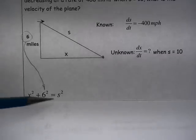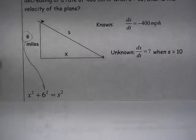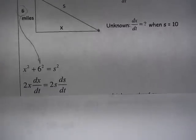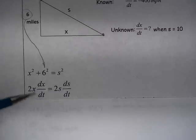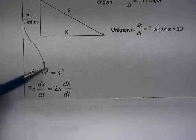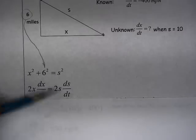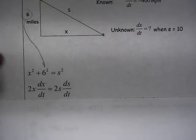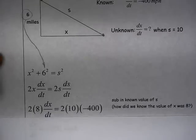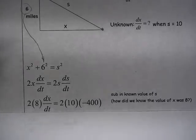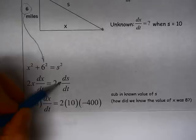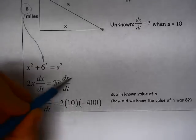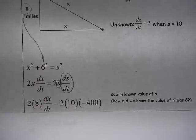So now I have that set up. I take the derivative with respect to time of both the left and the right. So I have 2x dx/dt, again using the chain rule. The derivative of 36 is 0, so we have equals 2s ds/dt. So now I can substitute in what I know. So I am looking for dx/dt. I know s is equal to 10 and I know ds/dt is equal to negative 400 miles per hour.